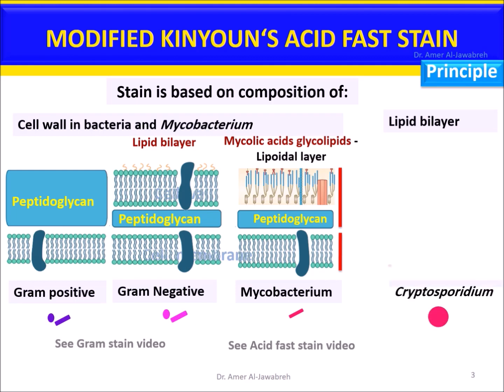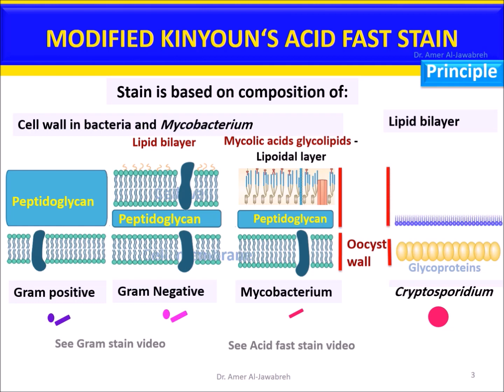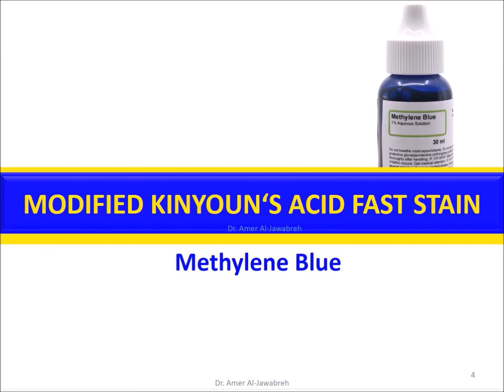Cryptosporidium, a Coccidian, has an oocyst wall and a rigid acid-fast lipid bilayer. Modified Kinyoun acid-fast stain uses methylene blue as a counter stain.